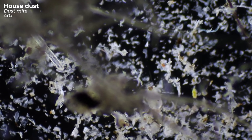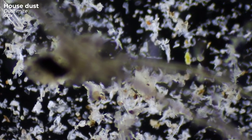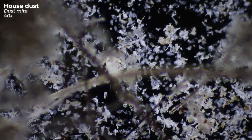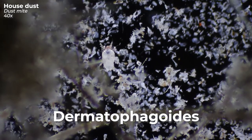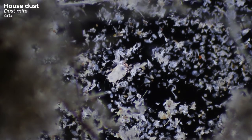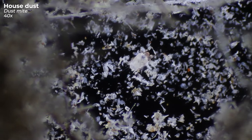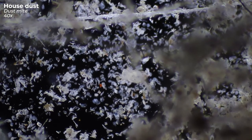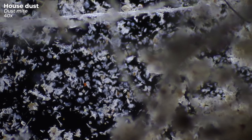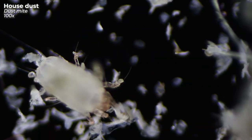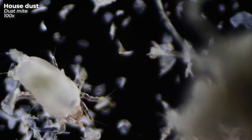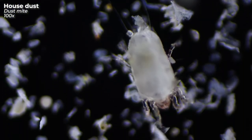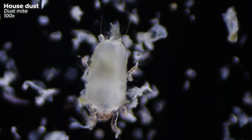In a way, a dust mite lives off of you because it feeds mainly on your skin flakes. The scientific name of dust mites is Dermatophagoides, which means 'skin eaters' — quite fitting if you ask me. In return for your feeding, the mite will poop in your bed about 20 times a day, so with an average lifespan of one to three months, it leaves 200 times its own body weight in excrement in your bed. Sounds great, doesn't it?